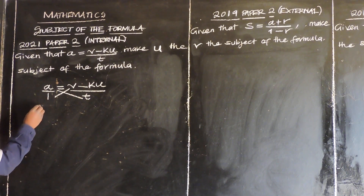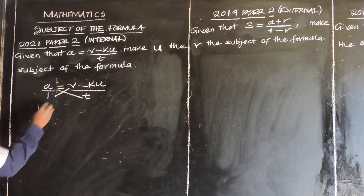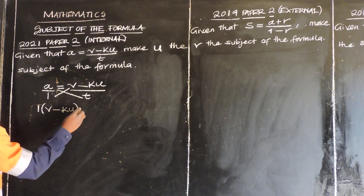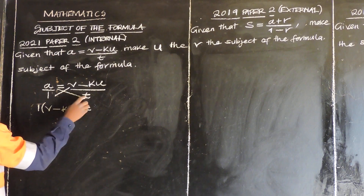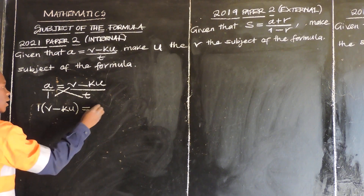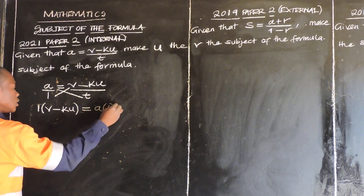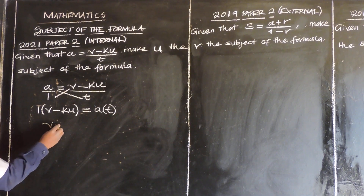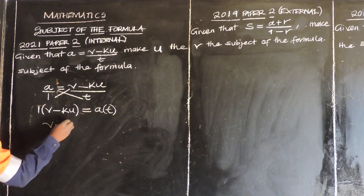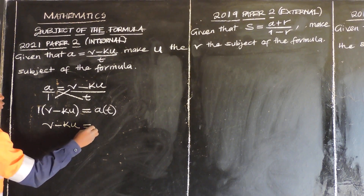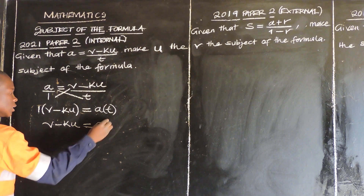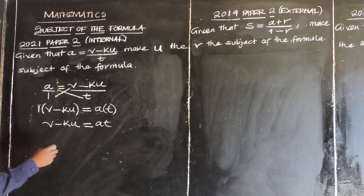We multiply: 1 multiplied by V minus KU is equal to A multiplied by T. So 1 times V gets V, 1 times negative KU gets negative KU, is equal to A times T gets AT.